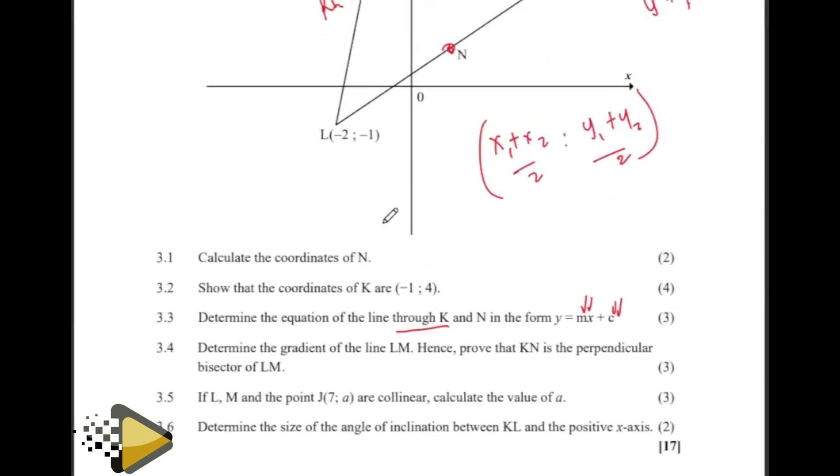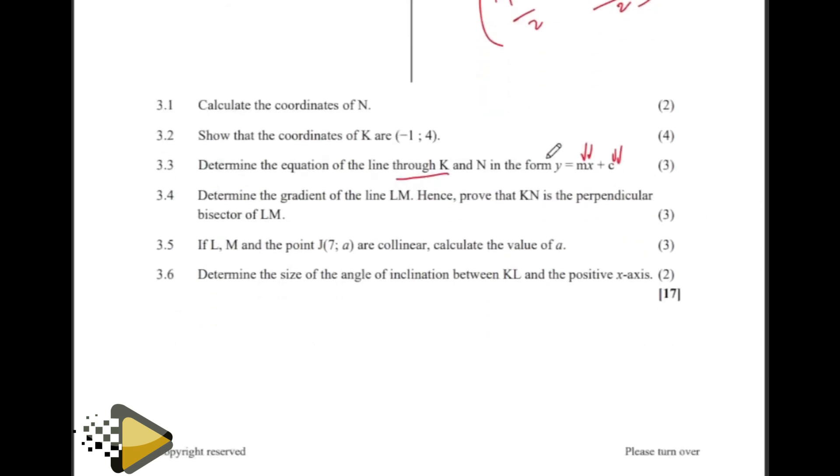Then gradient of the line LM. Use the gradient formula. And hence, so this word hence is like from where you stopped. After getting this gradient, can we use that gradient to prove that KN is perpendicular? Get the gradient of LM. You multiply it by the gradient of KN. If you get a negative one, then draw a conclusion.